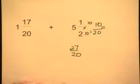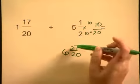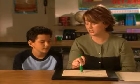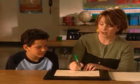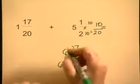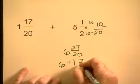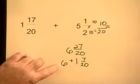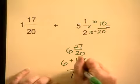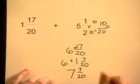That sounds familiar! So that is our fraction part, but we have to remember to do our whole numbers. What's 1 plus 5? 6. So now we have 6 and 27 twentieths. This is improper, so we need to change it to a mixed number. How many twentieths are in 27? 1. And how many twentieths did we have left over? 7. So now we have 1 and 7 twentieths plus our 6, which gives us 7 and 7 twentieths.